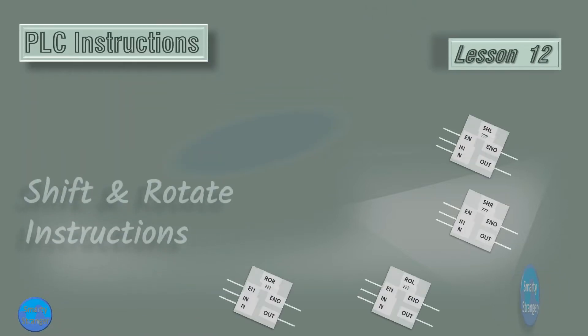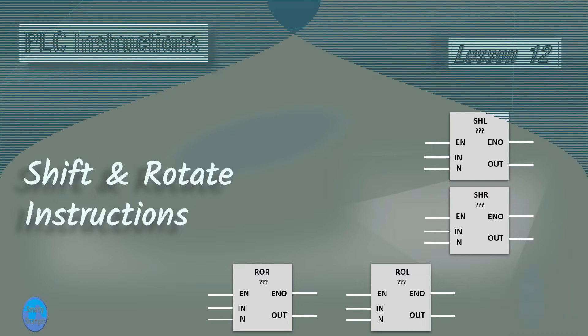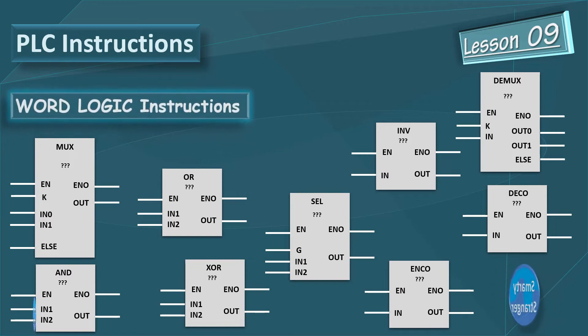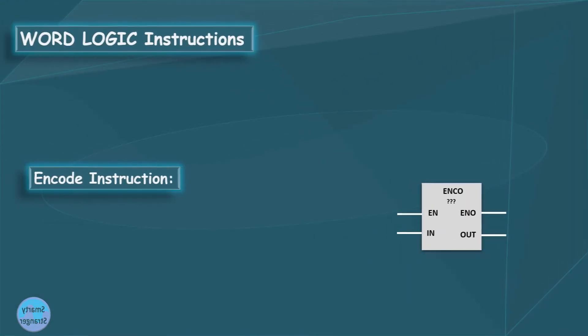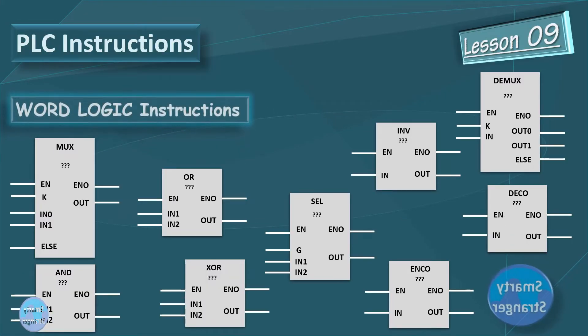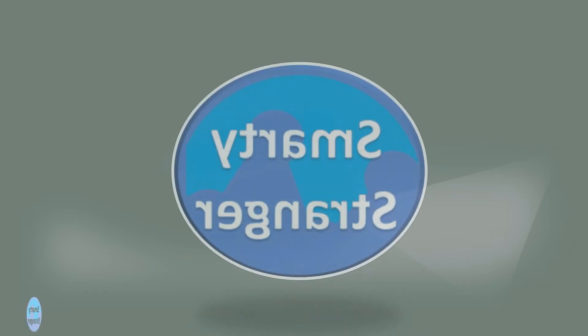Hi guys, Smarty here from the channel Smartest Ranger. Previously we studied about a family of instructions: the word logic family — NOR, XOR, invert, decode, encode, selection, MUX, and DEMUX are members of this family. If you have not seen our previous videos, go to our channel Smartest Ranger and take a look.